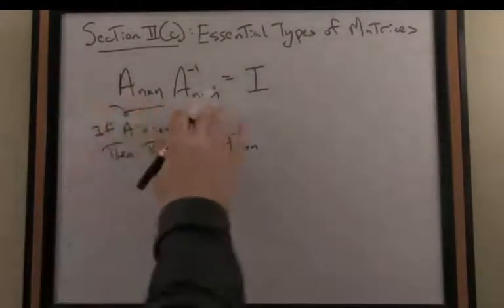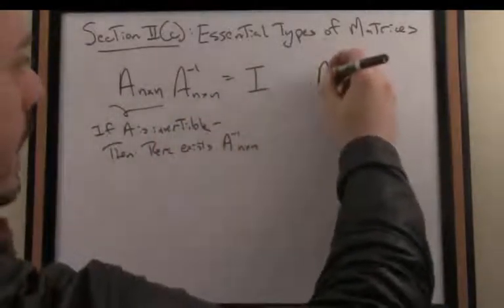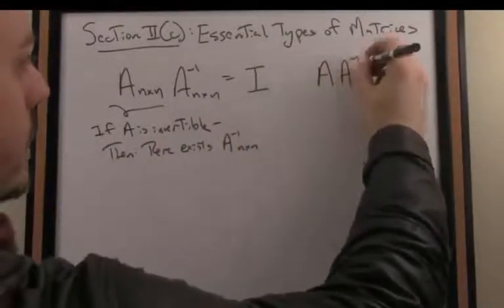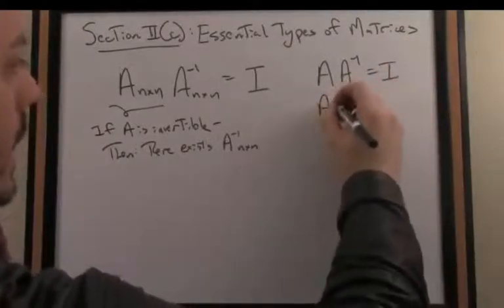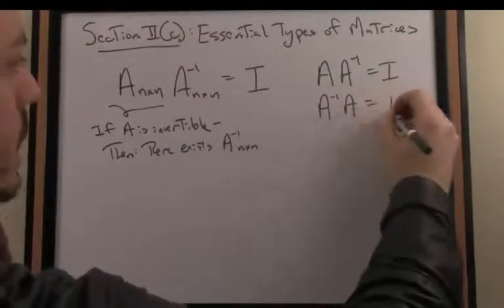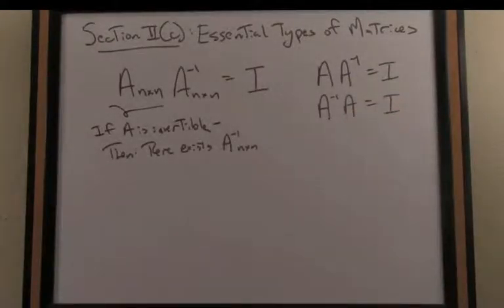We can sort of suppress the subscripts here. In other words, A times A inverse equals the identity, and in the reverse direction, A inverse A equals the identity. So essentially, if a matrix A is invertible, there is some matrix out there that we could find that essentially cancels that matrix by multiplication.